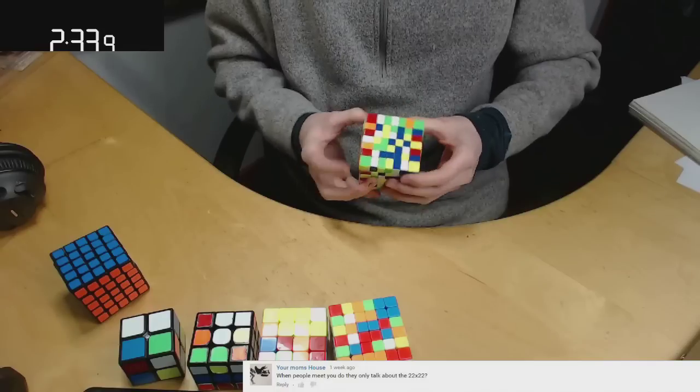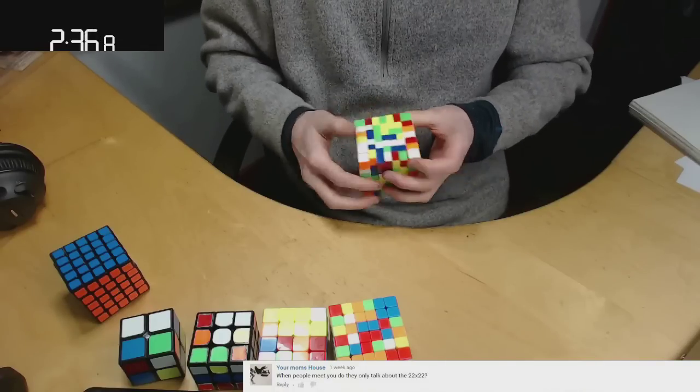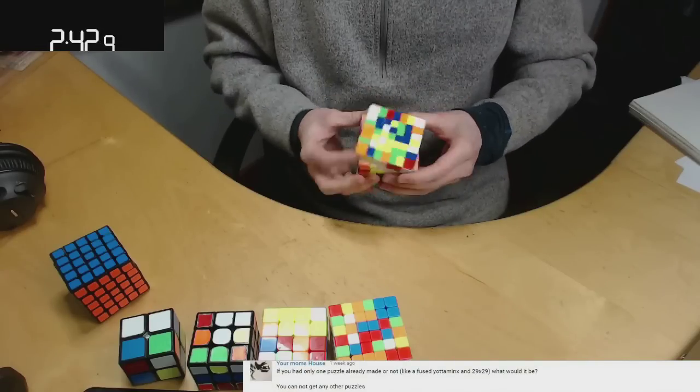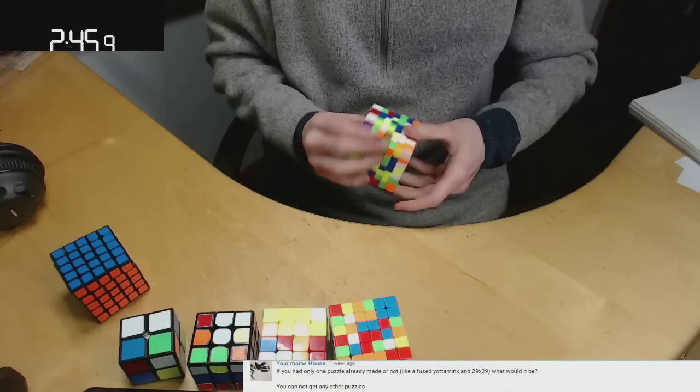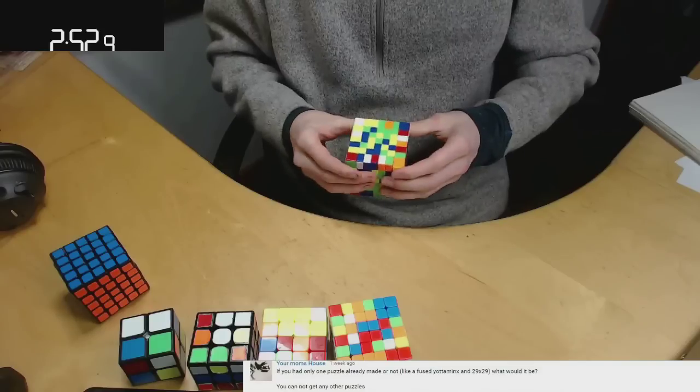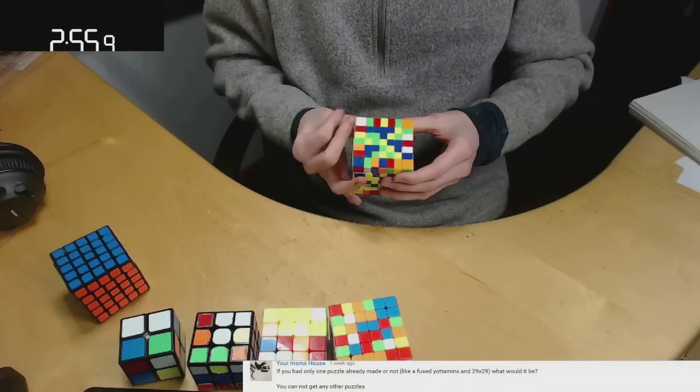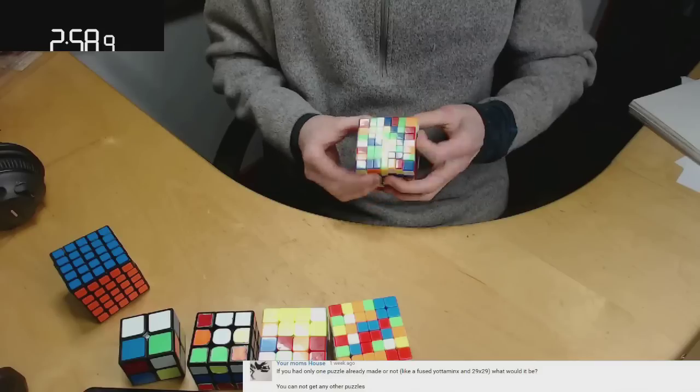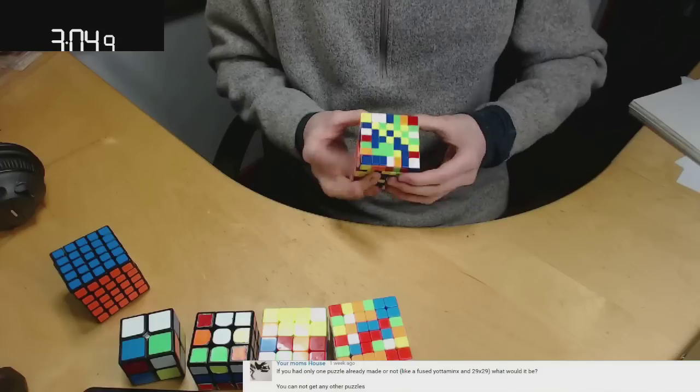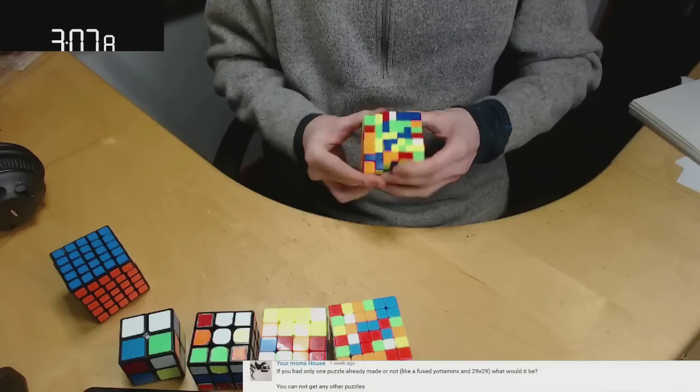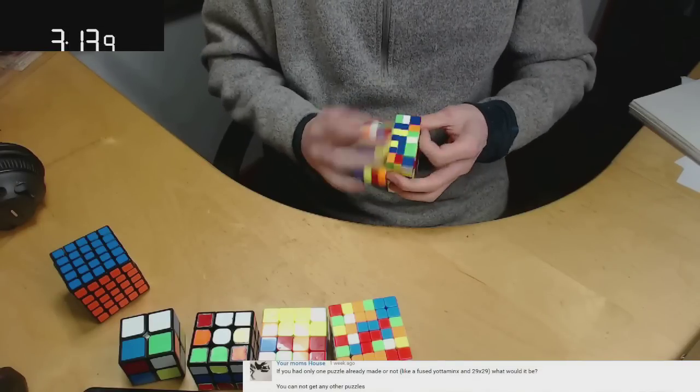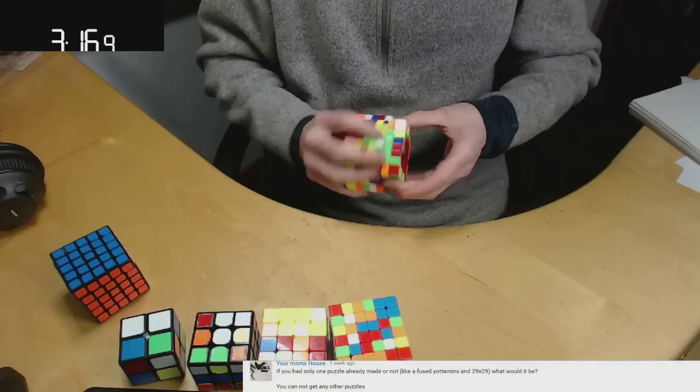When people meet you, do they only talk about the 22x22? I barely meet people so they don't really ask about that too much. If you had only one puzzle, already made or not, like a fused Yottaminx or 29x29, what would it be? You can get any, you cannot have any other puzzles. So I actually thought about this one for quite a while and there's a lot of cool puzzles out there, but I think the whole made or not thing, so I would go for a big Chop puzzle. If you guys don't know what that is you can look it up, but not in the dodecahedron form, either in like the 120-sided figure, like a big dice kind of thing.